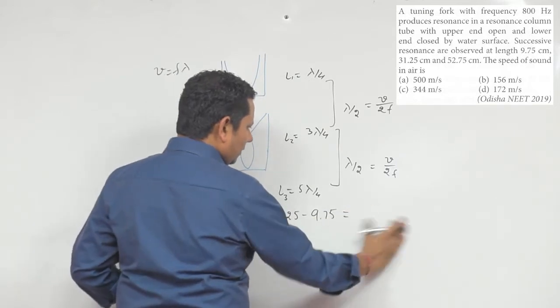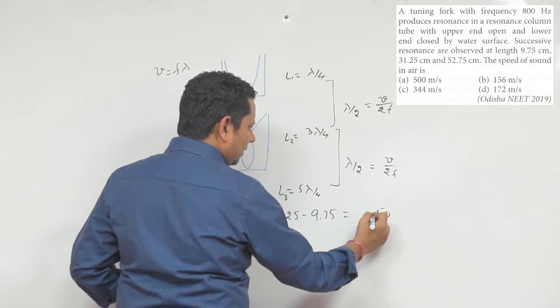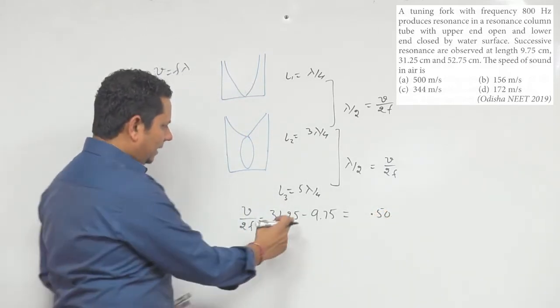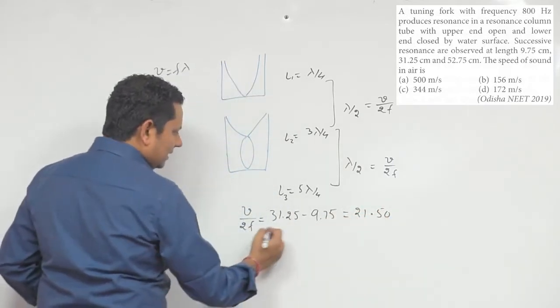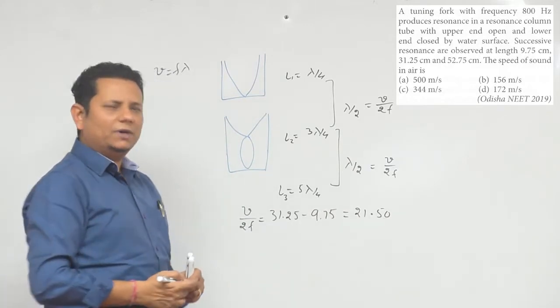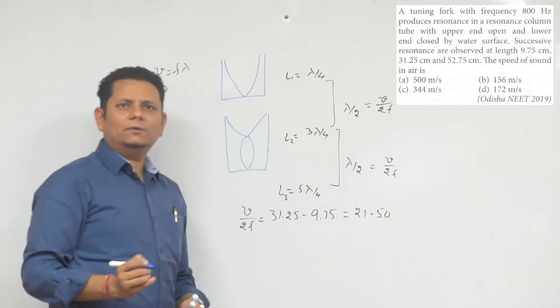This will be 50 and then 50, and before that the value will be 30 minus 21, which gives 21.50. Similarly, for the next case also, it should be the same, but let's check and verify this data.